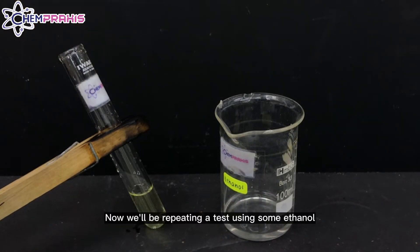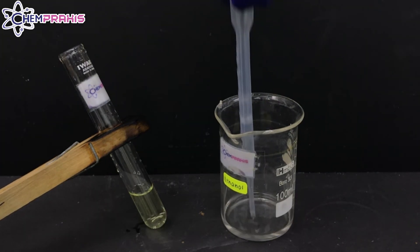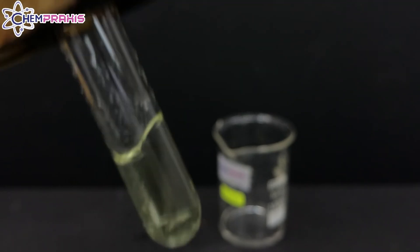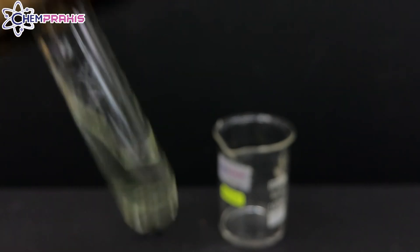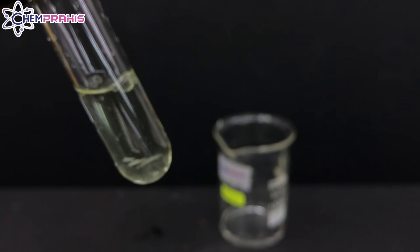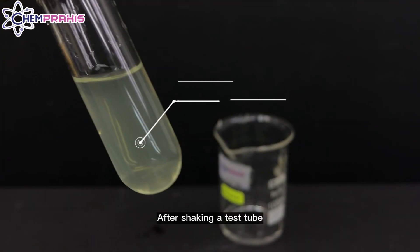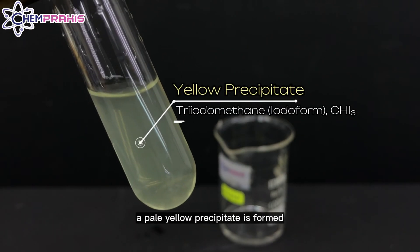Now we'll be repeating the test using some ethanol. After shaking the test tube, a pale yellow precipitate is found.